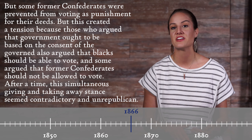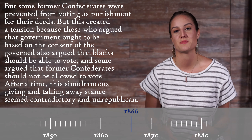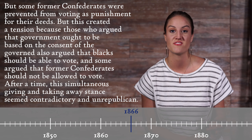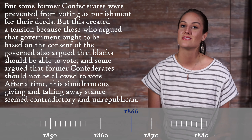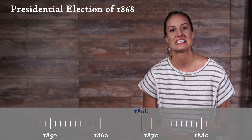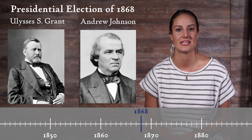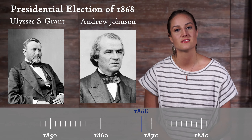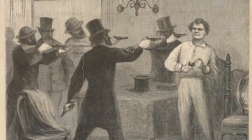Often members of the same side disagreed on the degree to which something should be done. Eventually, the former Confederate states held constitutional conventions and gave Black males the right to vote, but some former Confederates were prevented from voting as punishment for their deeds. This created a tension, because those who argued that government ought to be based on the consent of the governed also argued that Blacks should be able to vote, and some argued that former Confederates should not. After a time, this simultaneous giving-and-taking-away stance seemed contradictory and un-Republican. The presidential election of 1868 was between Ulysses S. Grant and Andrew Johnson. The Republicans ensured that Grant was elected, fearing that Johnson believed Reconstruction was finished. Grant's administration took a tougher line on civil rights, using federal troops regularly to protect voters and put down Ku Klux Klan violence.